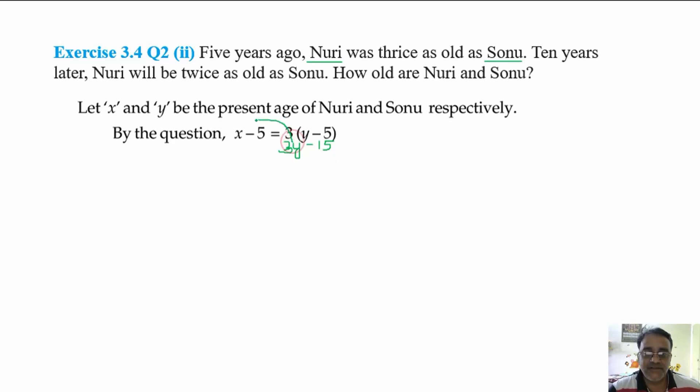So 3y ko idhar shift karo. Minus 3y. If you shift minus 15, then it will become plus 15. That is x minus 3y plus 10 is equal to 0 or x minus 3y is equal to minus 10. So whether this equation is clear? Yes sir.